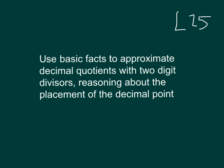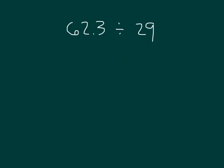Lesson 25, objective: using basic facts to approximate decimal quotients with two-digit divisors. In Module 1, we rounded our decimal factors to estimate the product. We will estimate quotients now by rounding the whole and divisor.